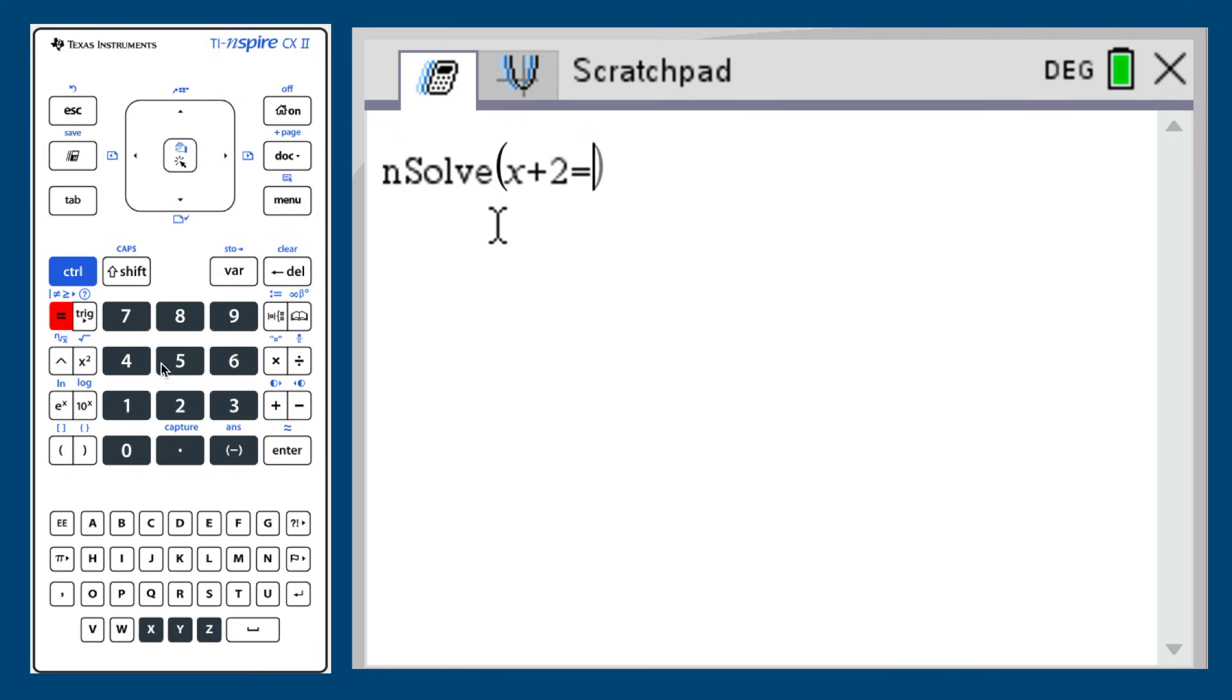Next, press the comma found in the far bottom left of the calculator, and enter x. This is the variable we want to solve for. Finally, press enter, and the answer will appear.